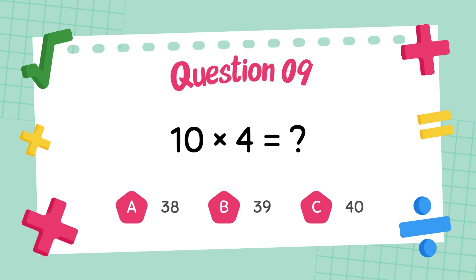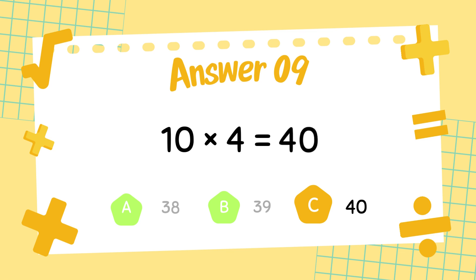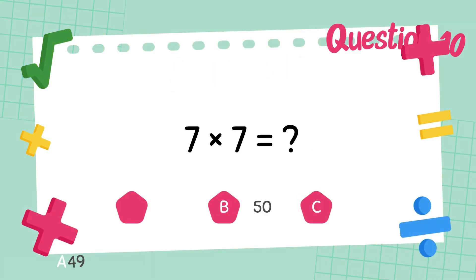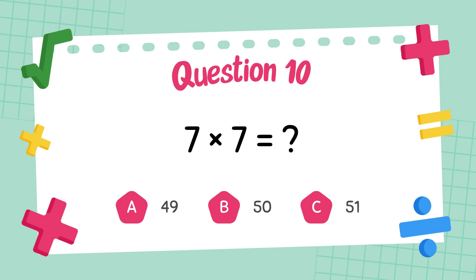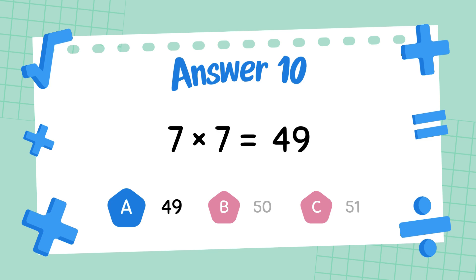What is 10 times 4? The answer is 40. What is 7 times 7? The answer is 49.